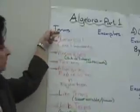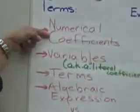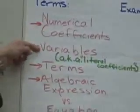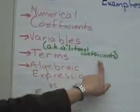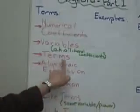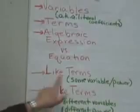The terms in algebra are the following: numerical coefficients, variables, also known as literal coefficients, terms, algebraic expression versus an equation, like terms and unlike terms.